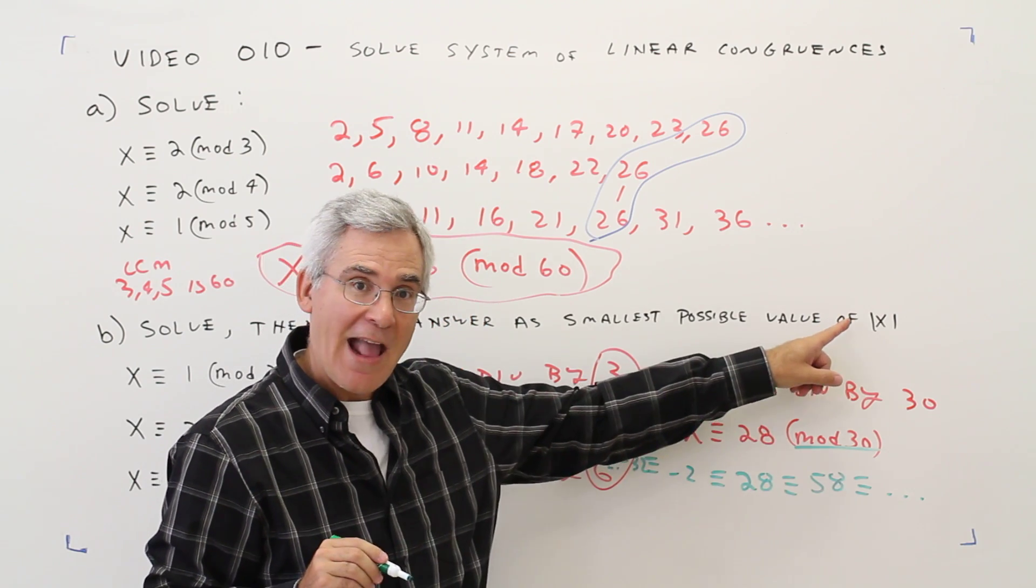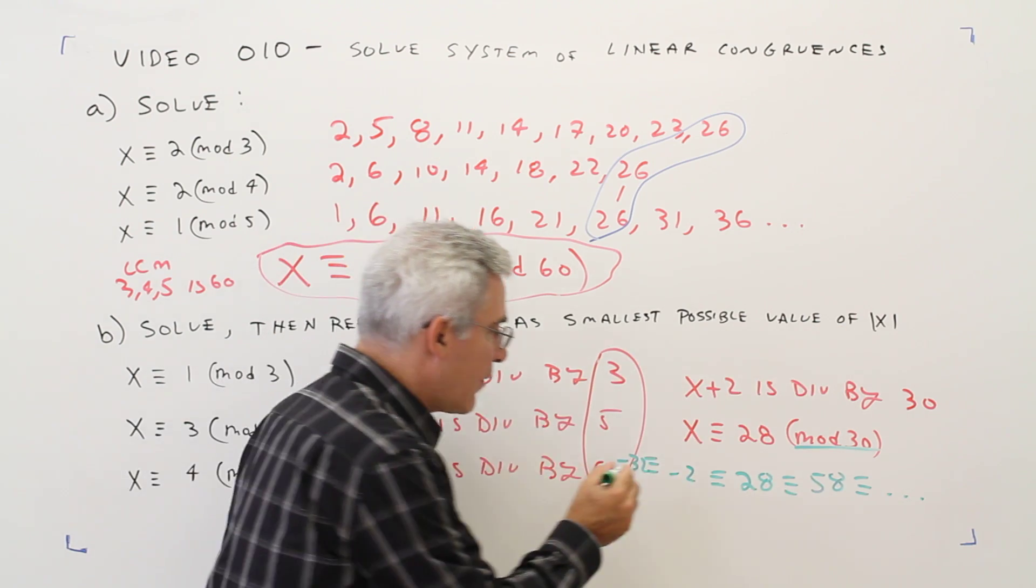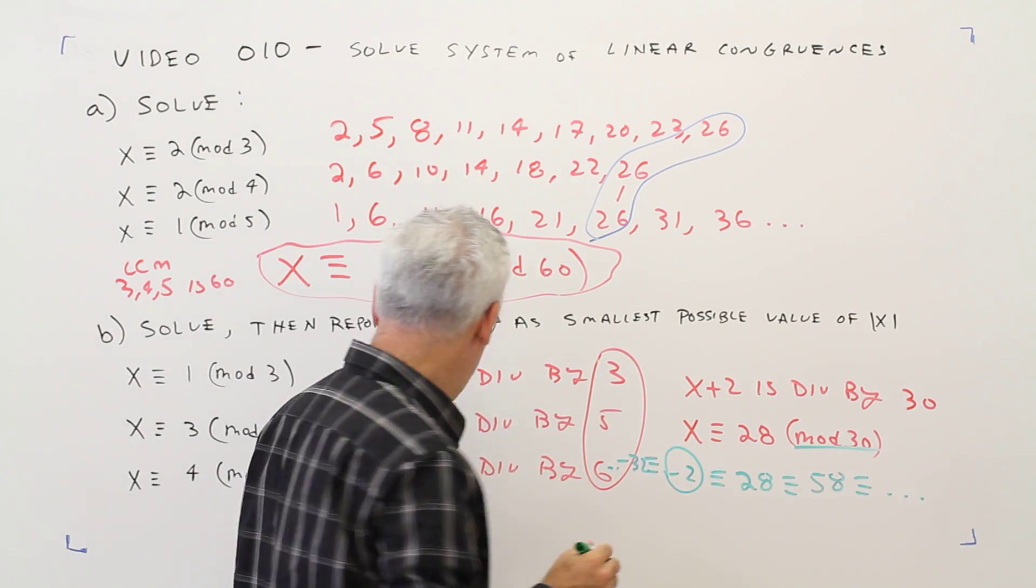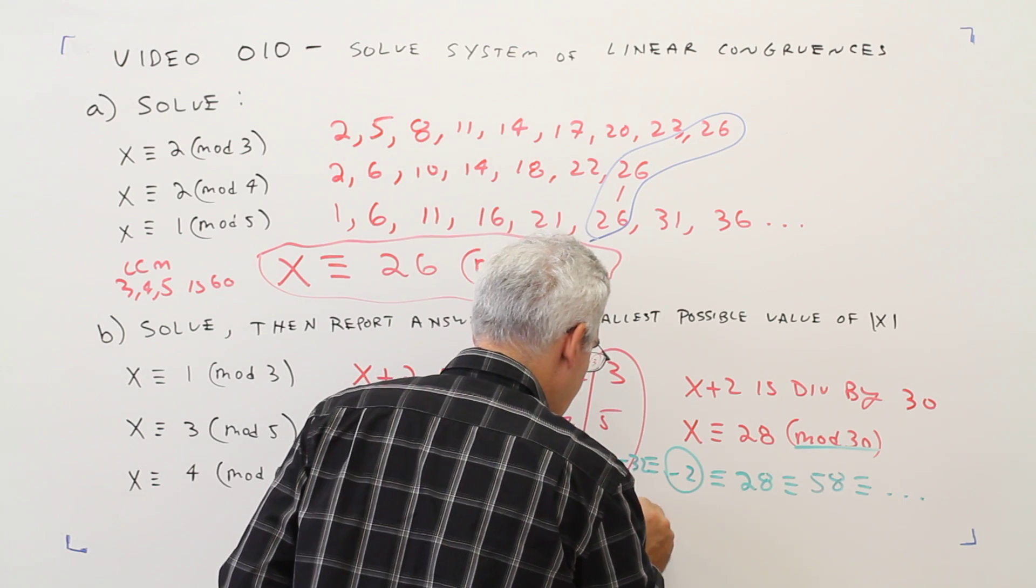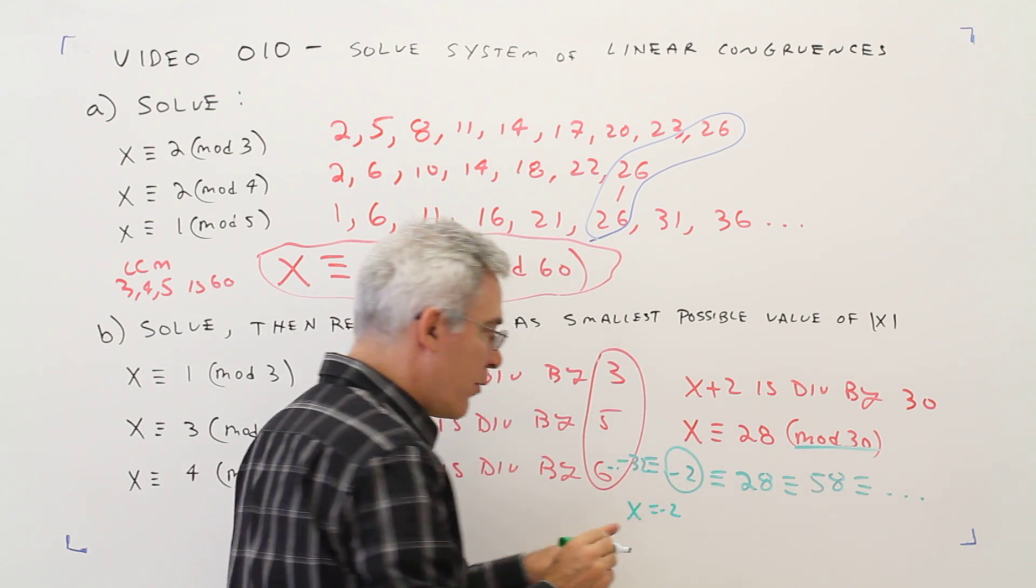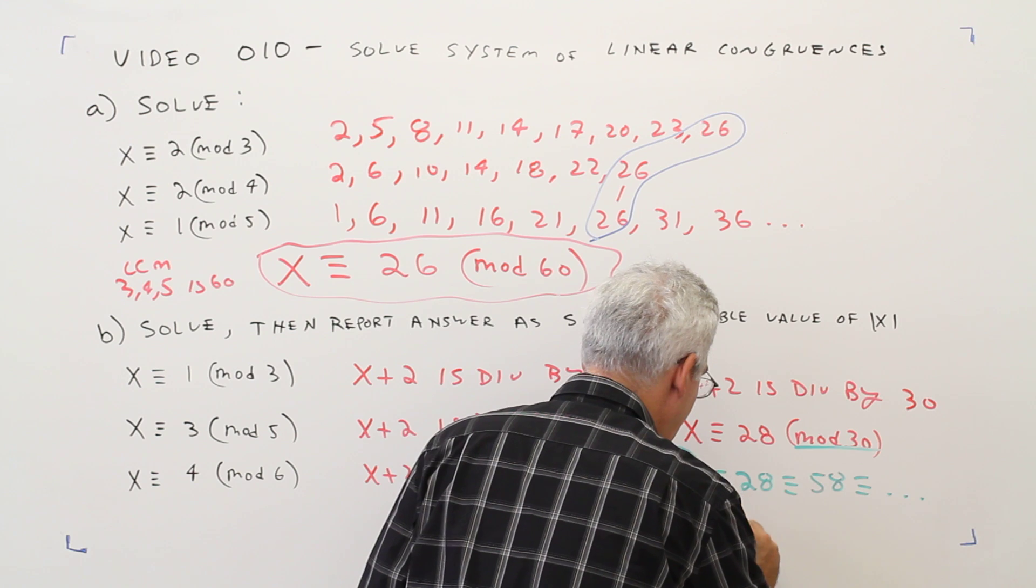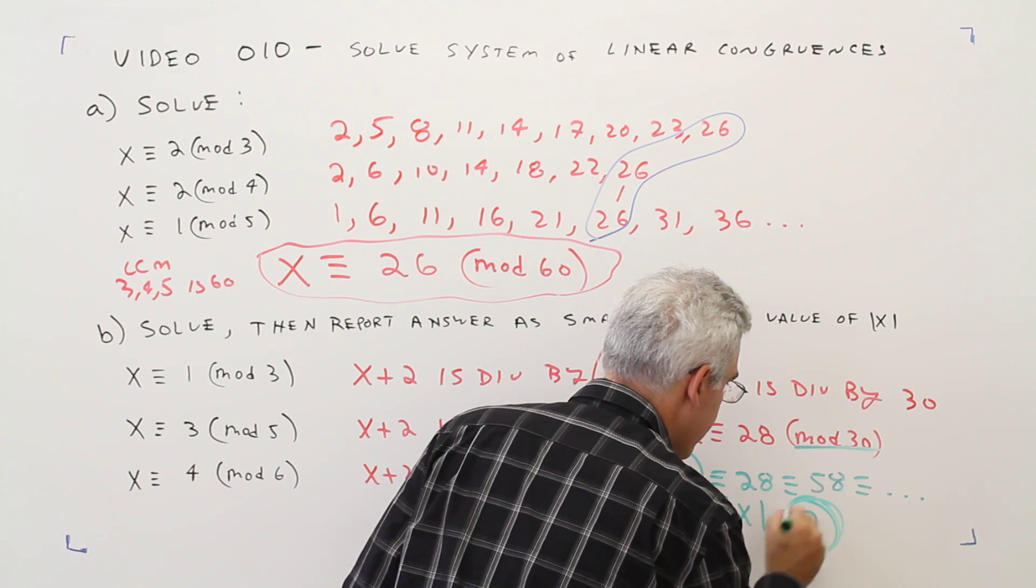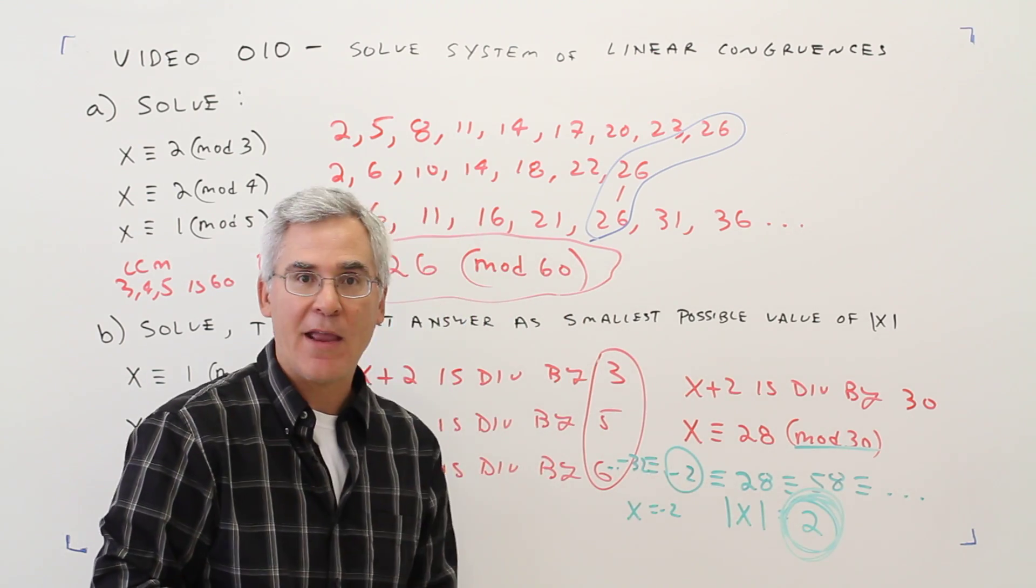Since they asked for the absolute value of x, this would generate the smallest possible value of x. So in this case, x equals negative 2 is the solution of my pick. And the absolute value of x equals 2. And that's my answer.